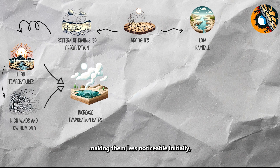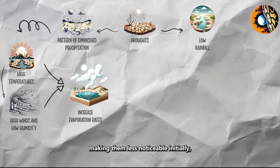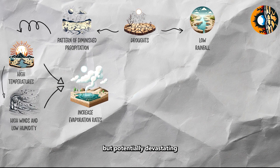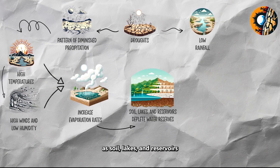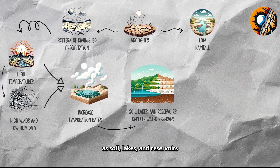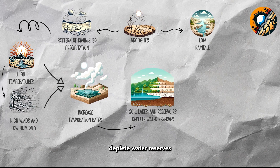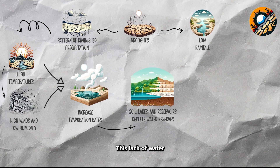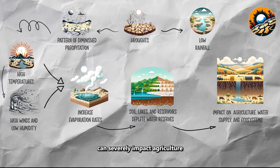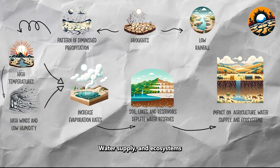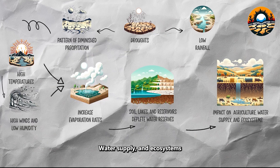The onset of droughts is gradual, making them less noticeable initially, but potentially devastating as soil, lakes, and reservoirs deplete water reserves. This lack of water can severely impact agriculture, water supply, and ecosystems.